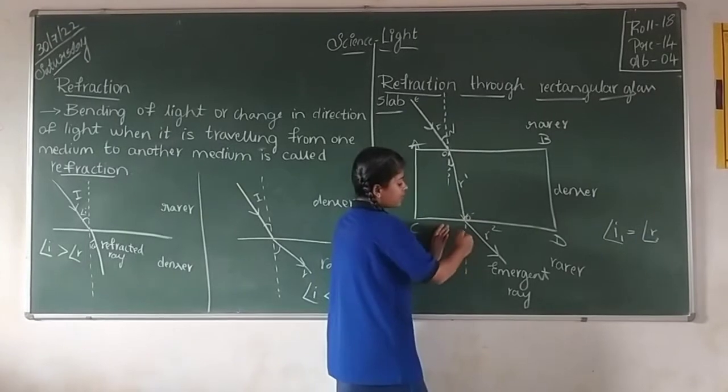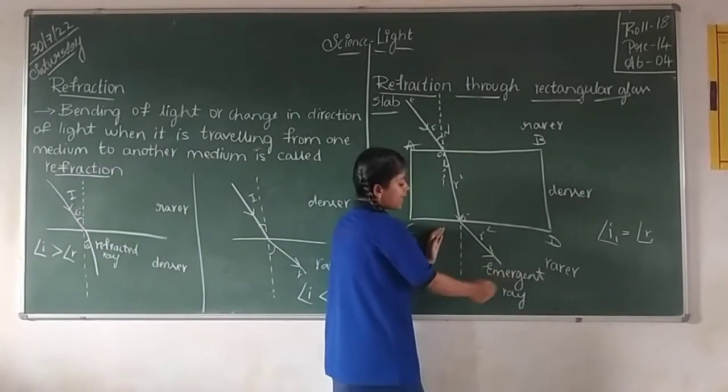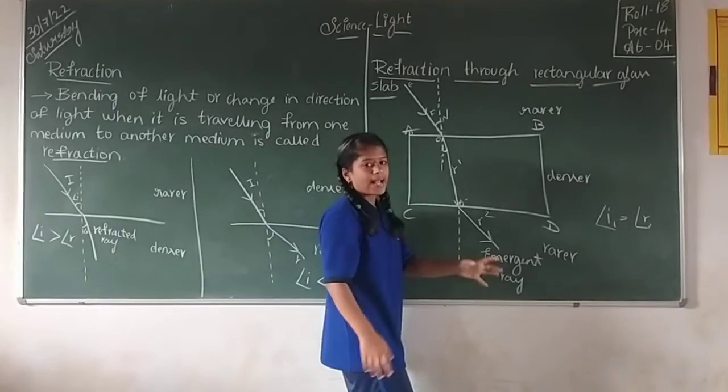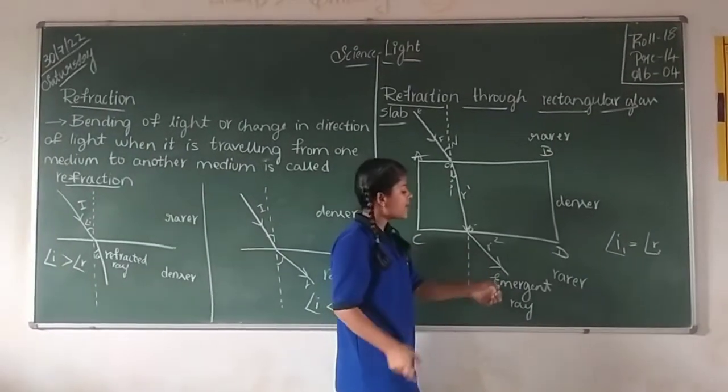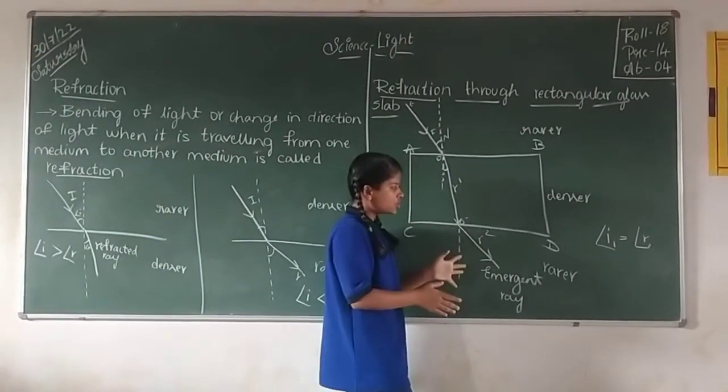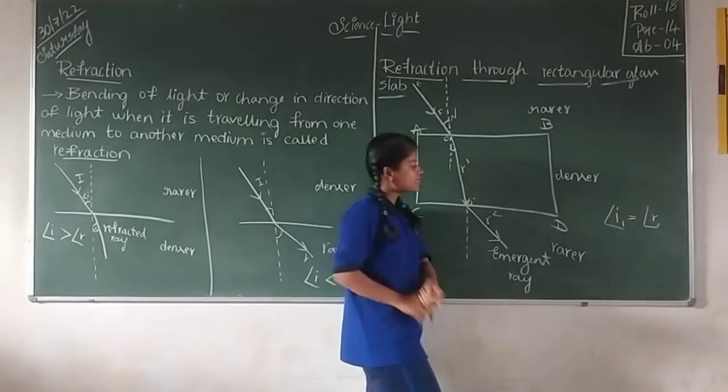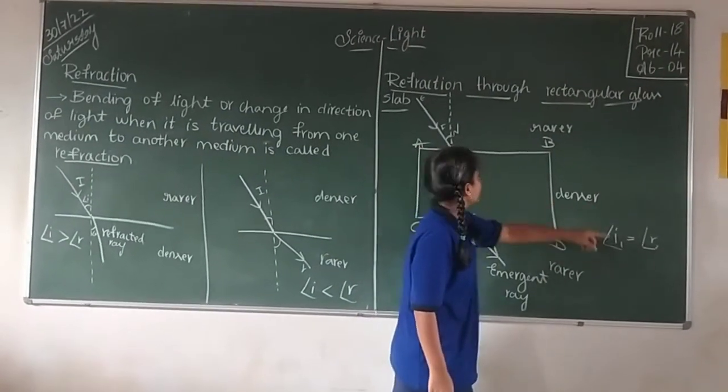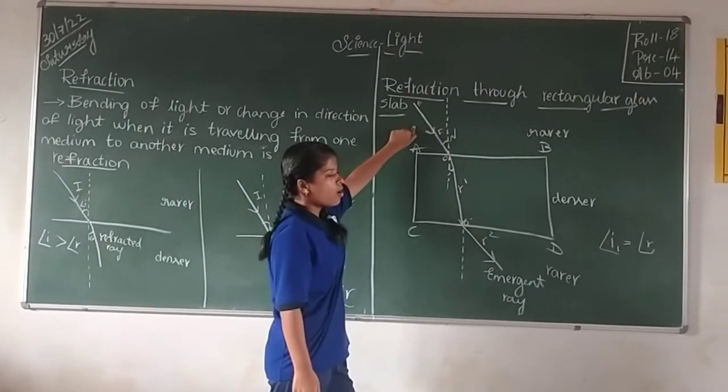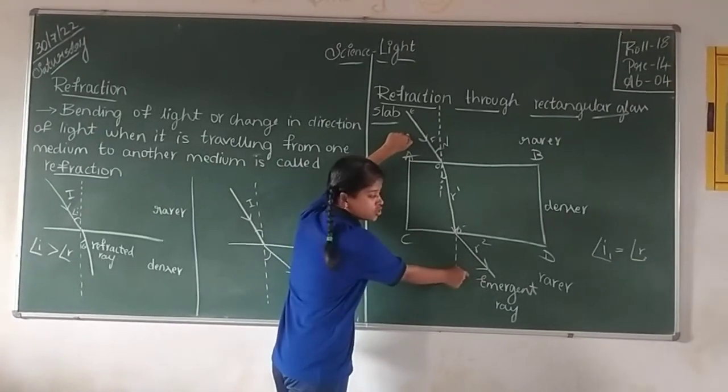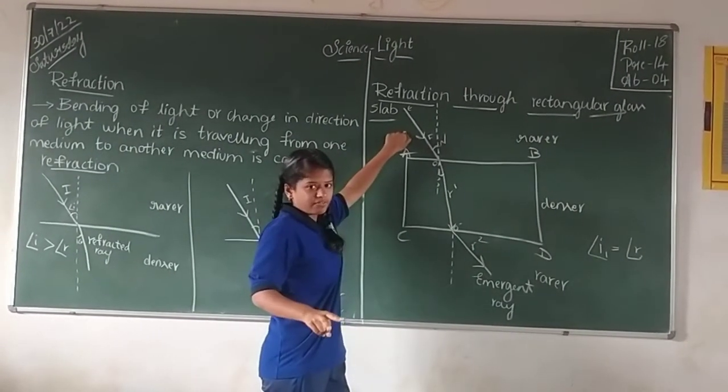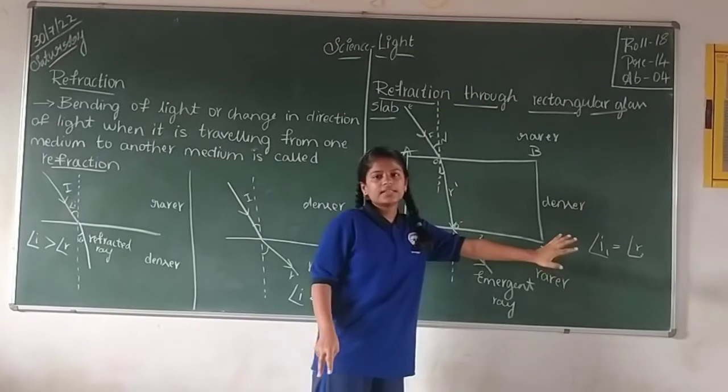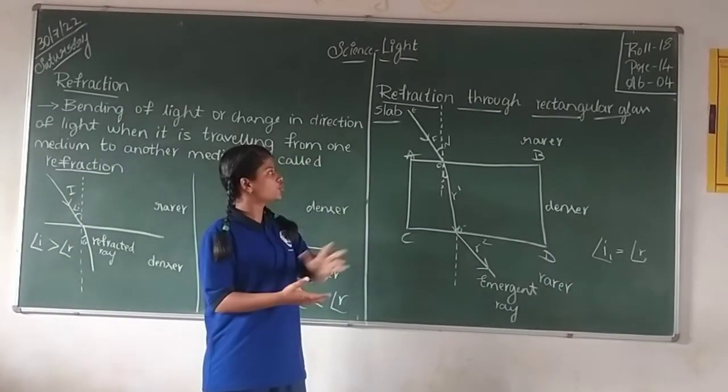the refracted ray will move away from the normal. That way we call it by a special scientific term called emergent ray. In this situation the one key point is the angle of incidence, that is the first angle of incidence, and the emergent ray angle are equal. This is all about refraction through rectangular glass slab.